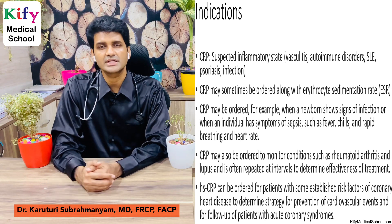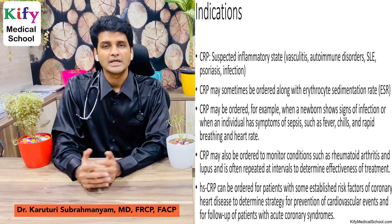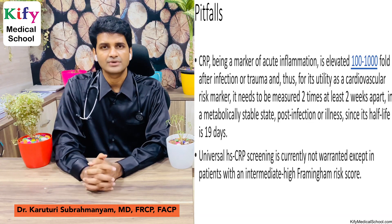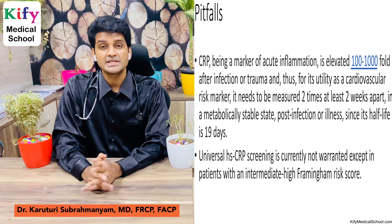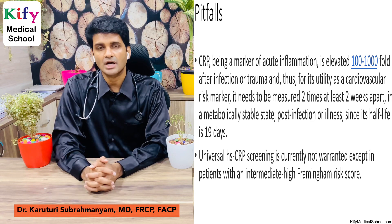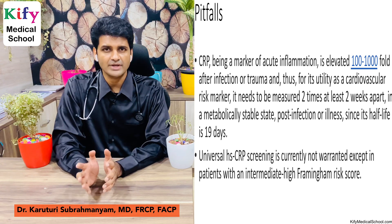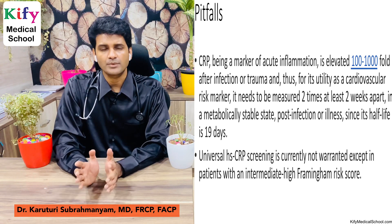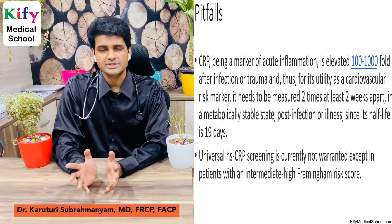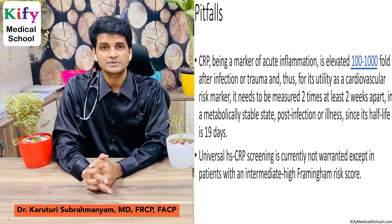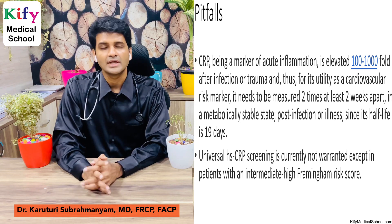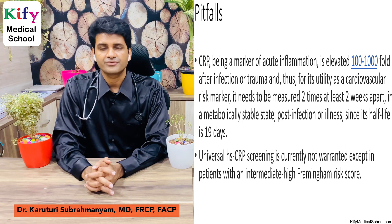Serial CRP measurements can be ordered to monitor response to treatment. hs-CRP is used for prevention and follow-up of cardiovascular events, including in patients with acute coronary syndromes. Because CRP is elevated 100 to 1000-fold after infection or trauma, for cardiovascular risk assessment it should be measured at least twice, two weeks apart, in a metabolically stable state post-infection or sepsis, as its half-life is at least 19 days. Universal hs-CRP screening is not warranted except in patients with an intermediate-high Framingham risk score.